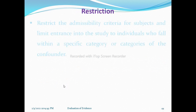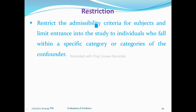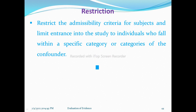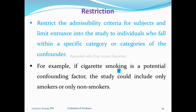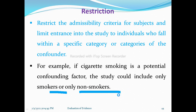Restriction means restricting the admissibility criteria for subjects, limiting entrance to the study to individuals who fall within a specific category of the confounder. Those individuals whose specific characteristics would affect the finding are excluded. For example, if cigarette smoking is a potential confounding factor, the study could include only smokers or only non-smokers.